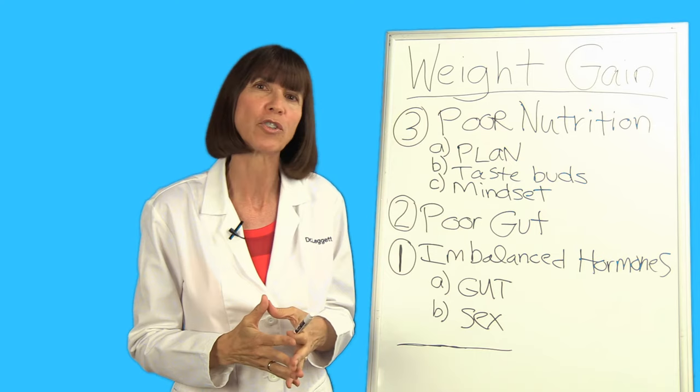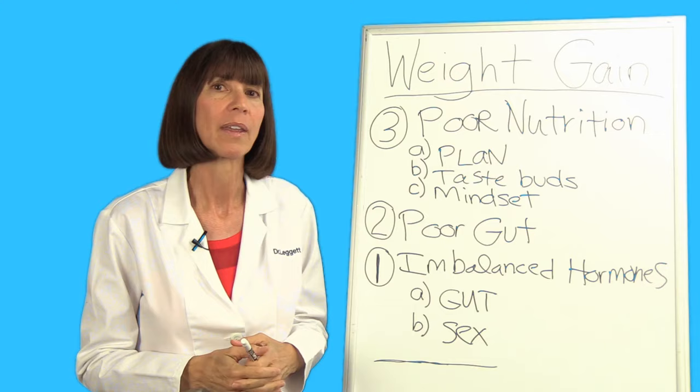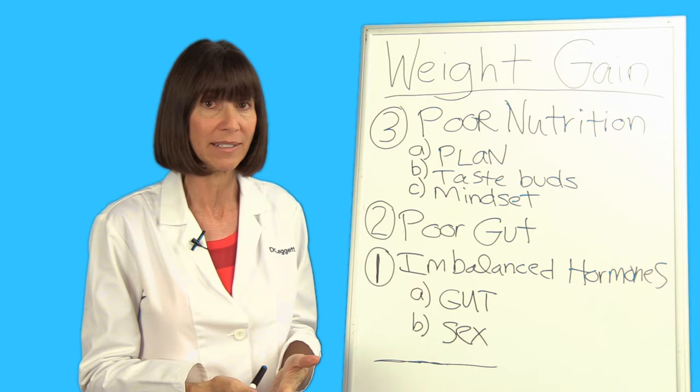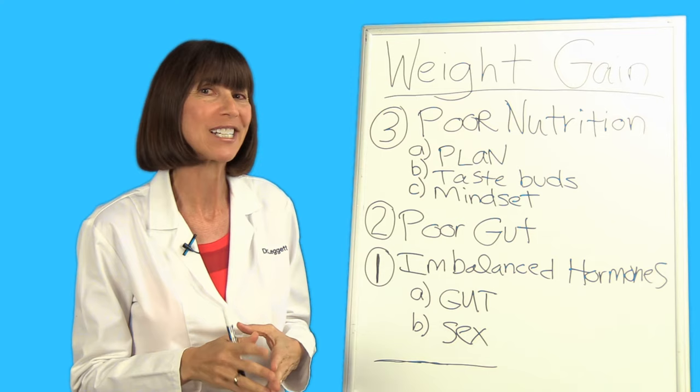Xenoestrogens are toxic substances we are exposed to that mimic estrogen and come from our food and the environment. One example of a toxic xenoestrogens is the pesticide Roundup that makes its way into our food during non-organic farming methods. And Roundup is just one example. There are many. BPAs, which stand for bisphenol A, are also xenoestrogens. More on xenoestrogens in our last video of this series, so stay tuned.